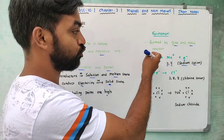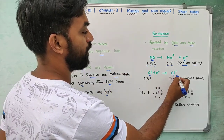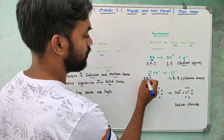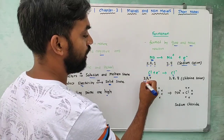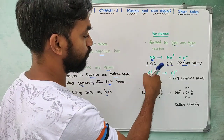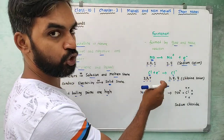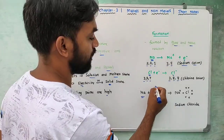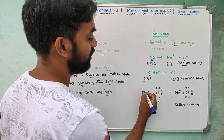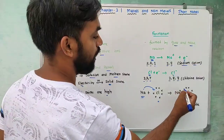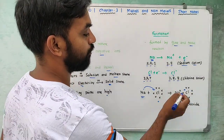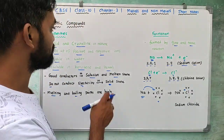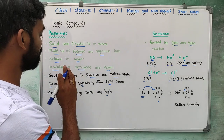For example, sodium gives one electron to chlorine. Chlorine gains that electron to form a chloride anion — a negative ion. Sodium loses an electron to form a positive ion. Together they form sodium chloride, an ionic compound that is crystalline and solid.